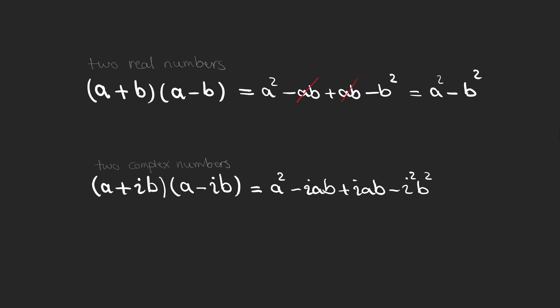The two middle terms cancel out, and since i squared is minus one, we are left with a squared plus b squared.